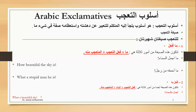So as I said, the first construction ما أفعل consists of ما, then the verb of exclamation, then the object of exclamation. More examples: ما أجمل الزهور، ما أحسن القراءة، ما أجمل الصدق، ما أقبح البخل، ما أشجع جنودنا، ما أسرع الفهد، ما ألطف الأطفال. These are all exclamatory patterns in Arabic.